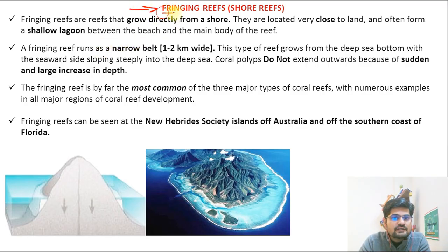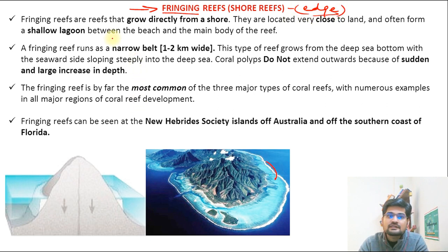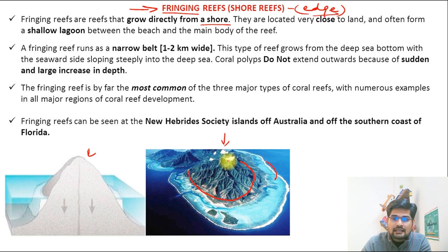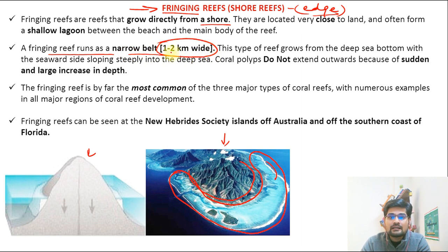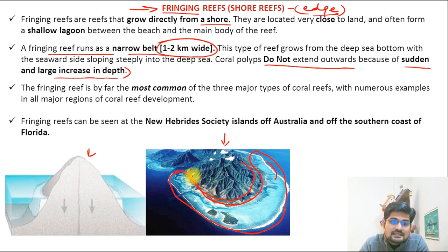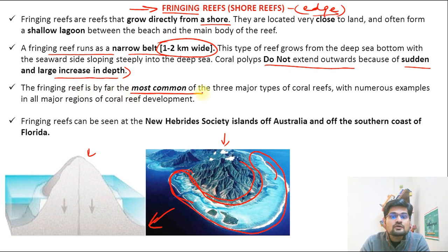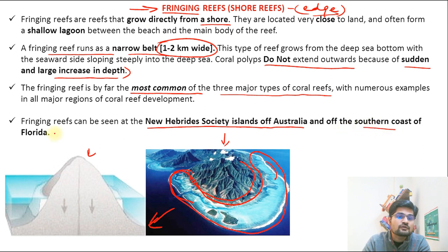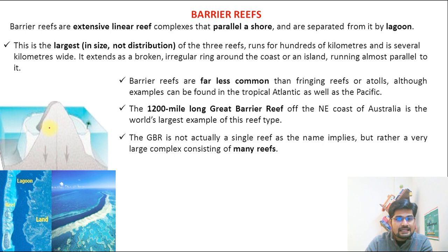The first type is the fringing reef. The word itself means 'fringe at the edges.' Fringing reefs grow directly away from the shore — they are on the fringes of islands where coral depositions happen. The fringing reef runs as a narrow belt, one to two kilometers wide, along these islands. Coral polyps do not extend outward because of a sudden large increase in depth. The fringing reef is by far the most common of the three types. Examples include the New Hebrides, Society Islands of Australia, and the southern coast of Florida.